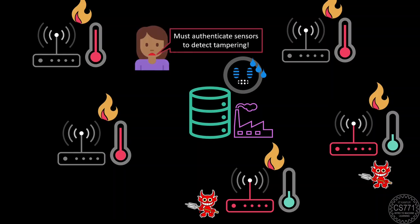A common way to avoid such tampering is to authenticate the sensors to ensure that they are indeed the same sensors that we placed and did not get replaced or tampered. Today, we will see how machine learning was used to reveal a critical flaw in one such hardware authentication protocol that alerted researchers and potentially saved countless victims from cyber attacks. My dear friends, this is CS771, Introduction to Machine Learning, and let's get started.